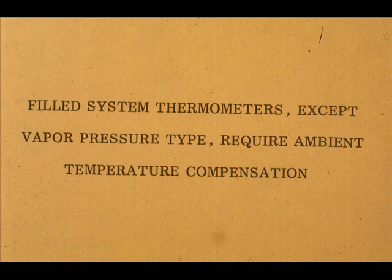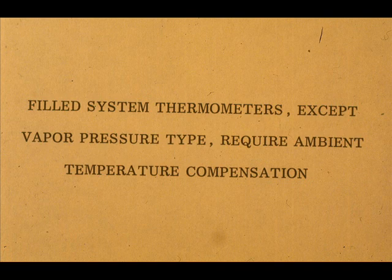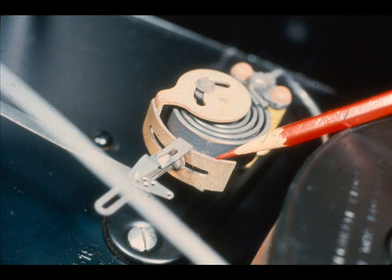Filled system thermometers, except the vapor pressure type, require some form of ambient temperature compensation. The most common form of case compensation is the bimetallic strip, like the one shown here. It counteracts the movement of the tip of the pressure-sensing device.